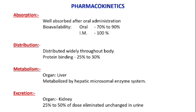Here is the pharmacokinetics of phenobarbital. Absorption: well absorbed after oral administration; bioavailability — oral: 70 to 90%, IM: 100%. Distribution: distributed widely throughout the body; protein binding is about 25 to 30%. Metabolism: phenobarbital is metabolized in the liver by the hepatic microsomal enzyme system.